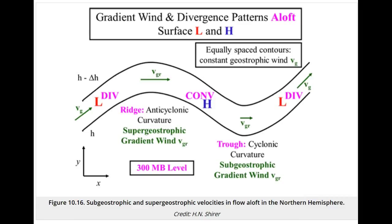Let's see how the gradient wind flow aloft can affect surface weather. Look at how the velocity changes as air flows around the ridge and then the trough aloft.